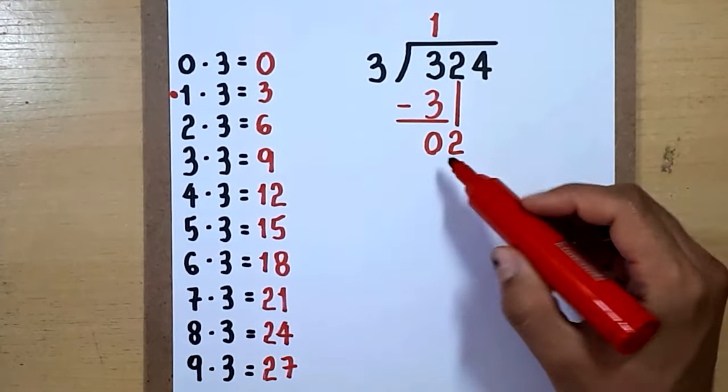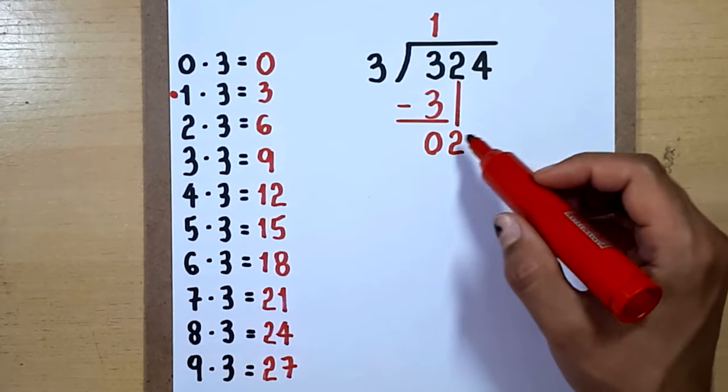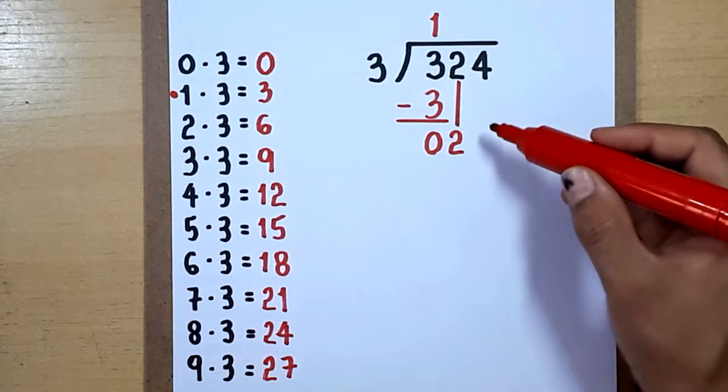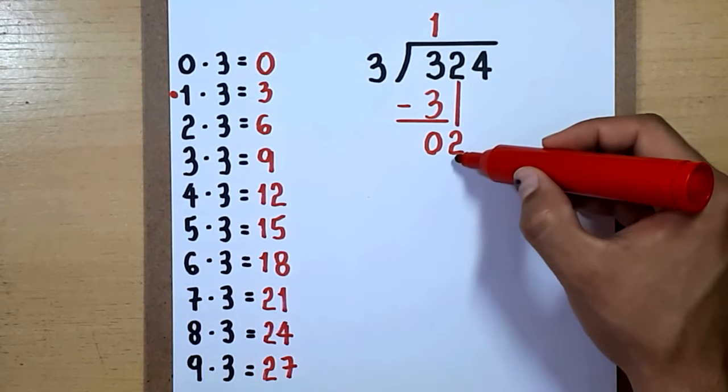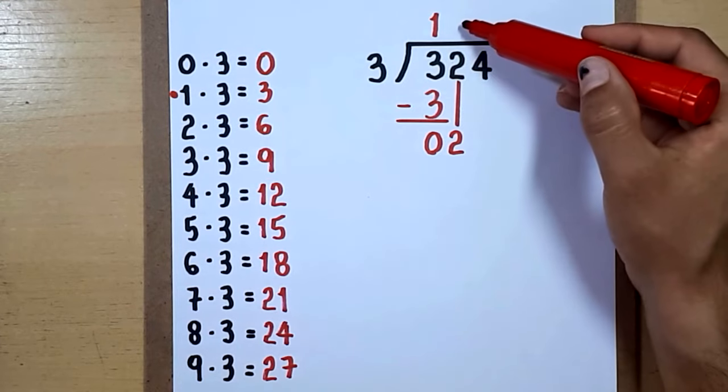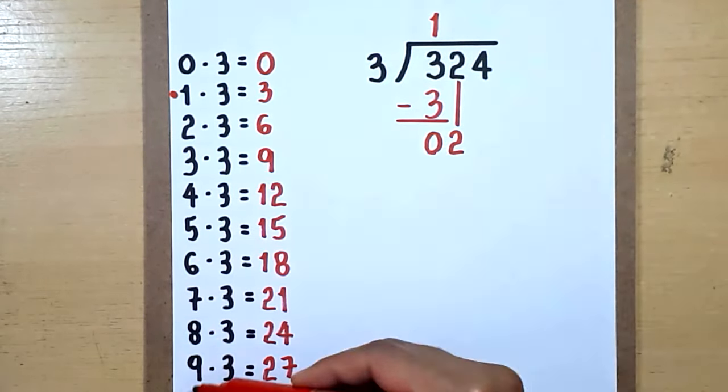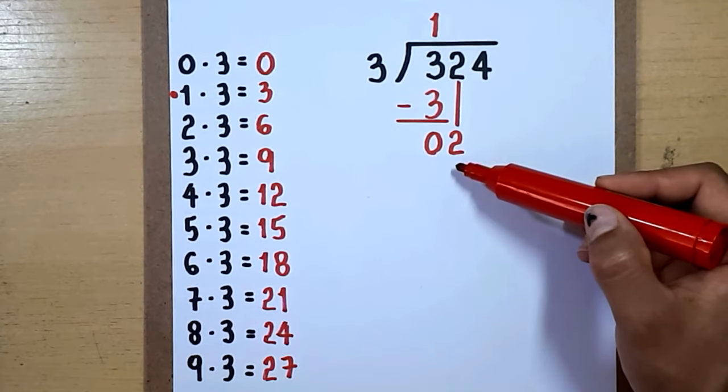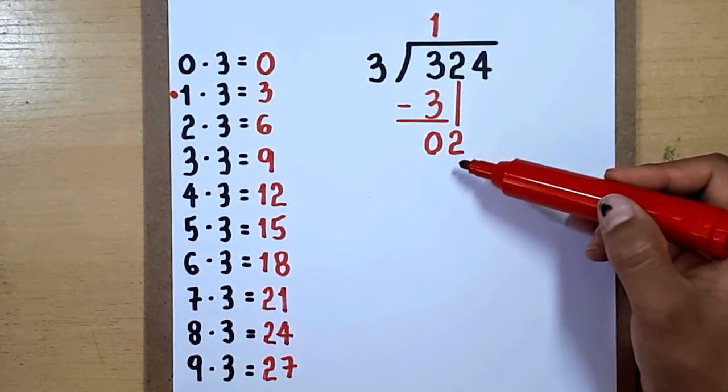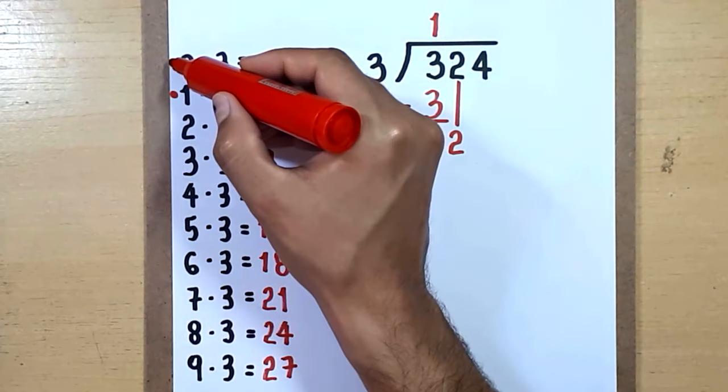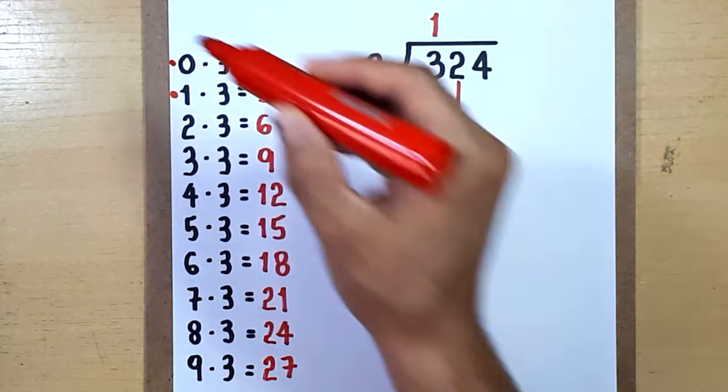Here you see 02. You can ignore this 0 on the left, just think about this 2. We ask the question: what number from 0 to 9 do you multiply by 3 to get 2 or almost 2 but not more than 2? You look at the multiplication table and then you see that that number is 0.